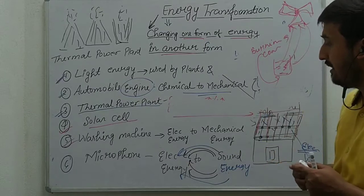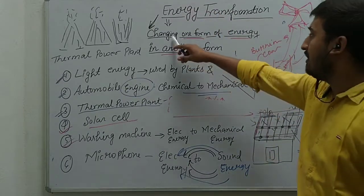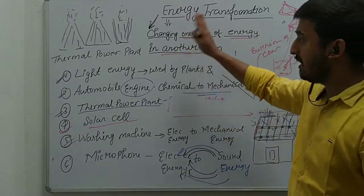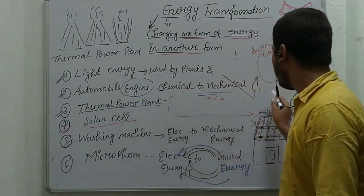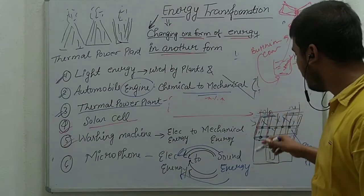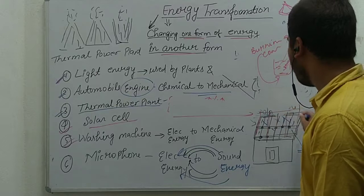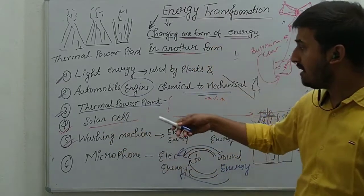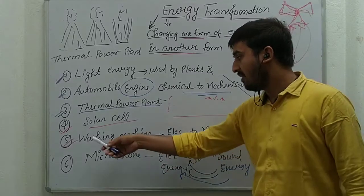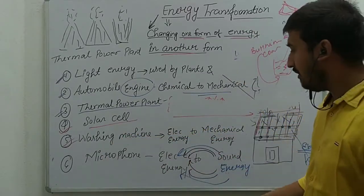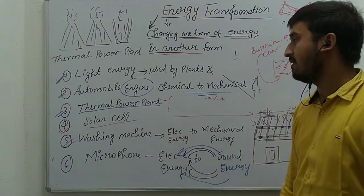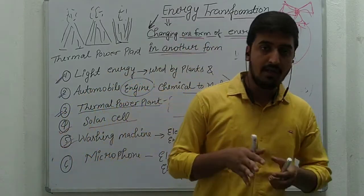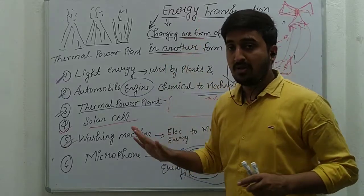To recap: energy transformation means changing one form of energy into another form. According to the law of conservation of energy, we can only convert one form into another. Solar power plants convert light energy into electrical energy. Automobile engines convert chemical energy to mechanical energy. Thermal power plants convert chemical energy to mechanical energy and then to electrical energy. Washing machines convert electrical energy to mechanical energy. Microphones convert sound energy to electrical energy.